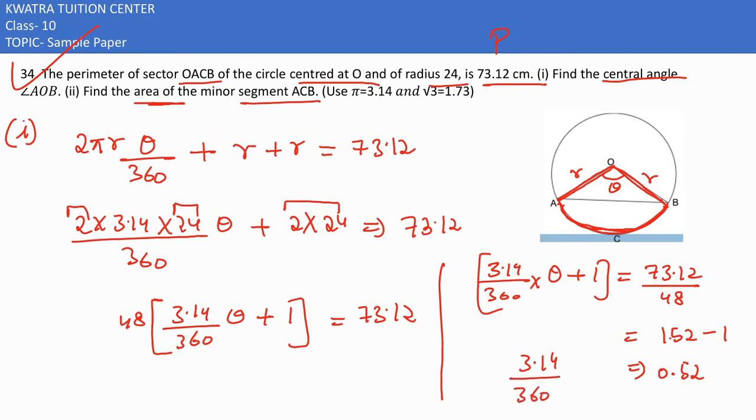On the left side we have 3.14 divided by 360 into theta. Take 360 to the other side.